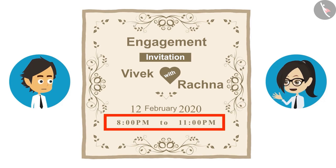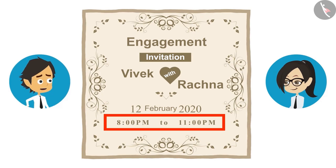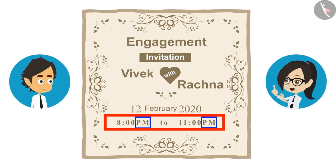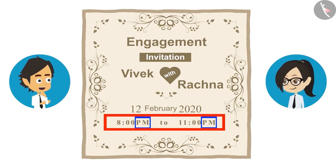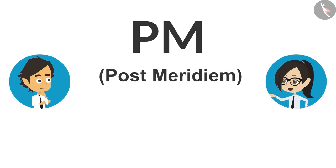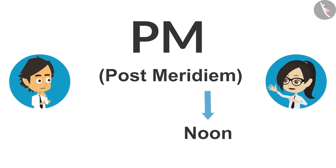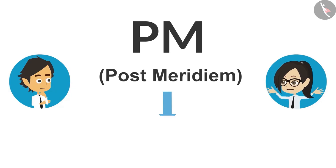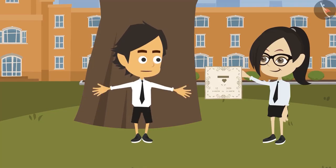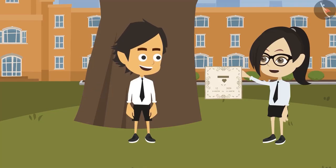In this card, the time written is from 8 o'clock in the evening to 11 o'clock at night. Who told you that the engagement is during school time? No, it is during school time — look carefully, PM is written in front of the time. Yes, I saw PM is written, that's why I am saying the engagement is in the evening. PM is used to mention the time before noon. No, Ayushman!